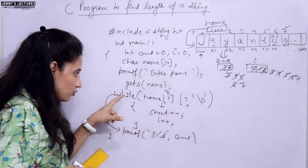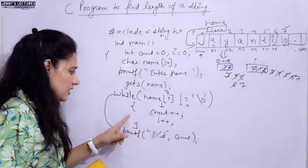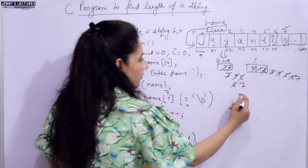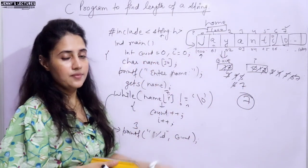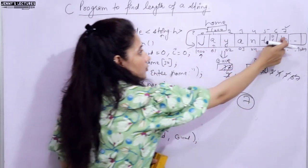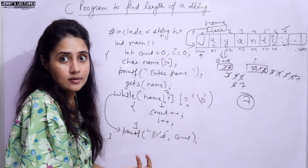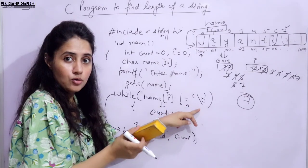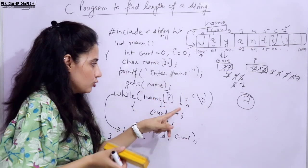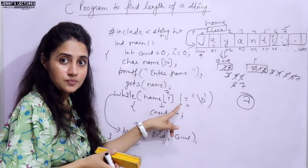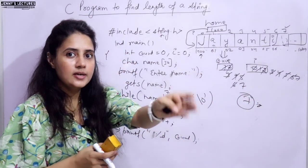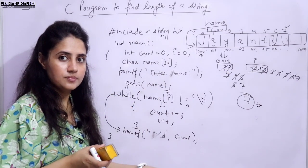After exiting the loop, we execute the printf statement outside the loop. Count value is 7, so 7 is printed - the length is 7. If you store 'Jayanti Khatri', at position 7 we have a space. The ASCII value of space is different from the null character (whose ASCII value is 0), so space is not null - count continues to 14.